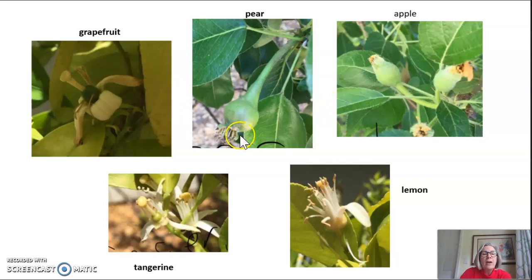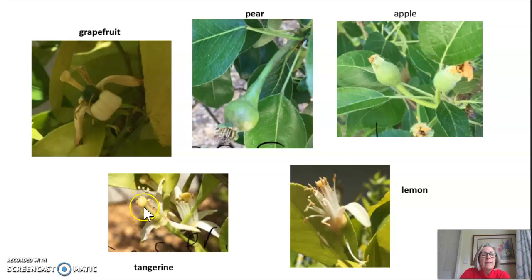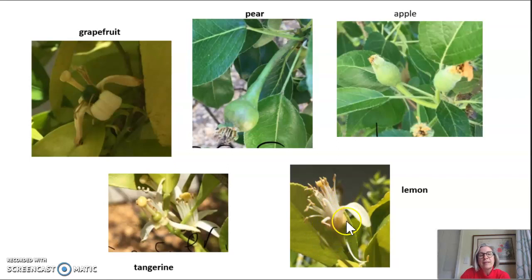Looking at the pear, you can see the dried remains of the original flower petals and the swollen ovary already taking the shape of a pear. Here's one of my apple trees — you can see the dried remains of the flower, the swelling ovary, and that's going to become the apple. Over here is a tangerine tree; you can still see the petals of the flower and the stigma and the style. And here's my lemon tree — you can see the remains of the flower, the swollen ovary, and it's already yellow because it's a lemon tree.